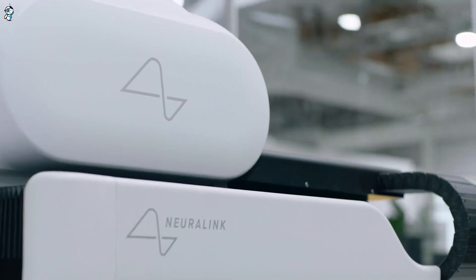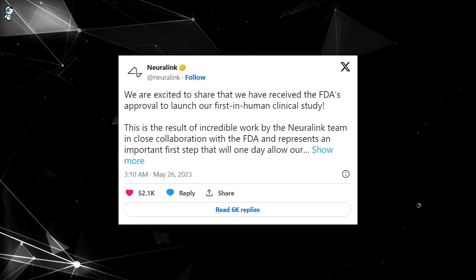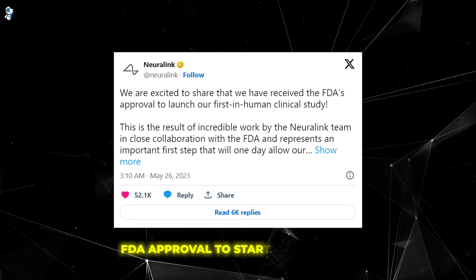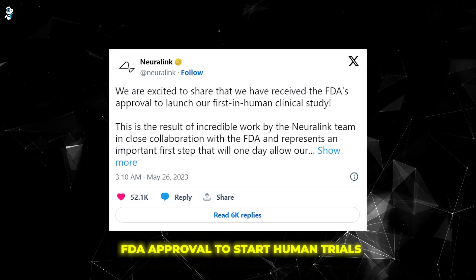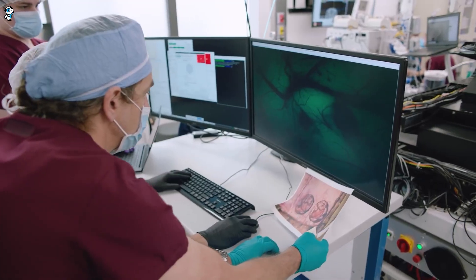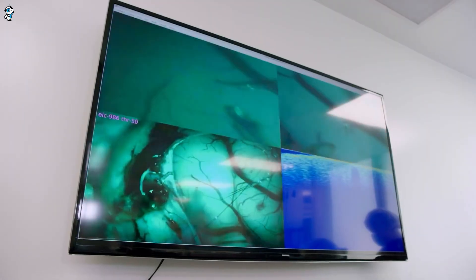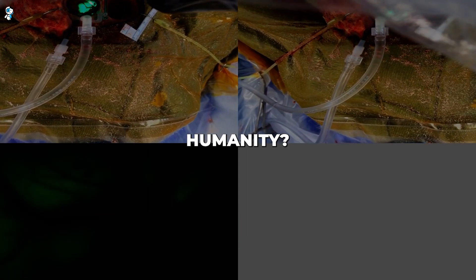Neuralink is about to take brain hacking to the next level. Elon Musk's revolutionary startup just got FDA approval to start human trials of their thought-controlled implants. This long-awaited green light sparks a historic new chapter of direct brain-computer links. But will this cybernetic future help or harm humanity?